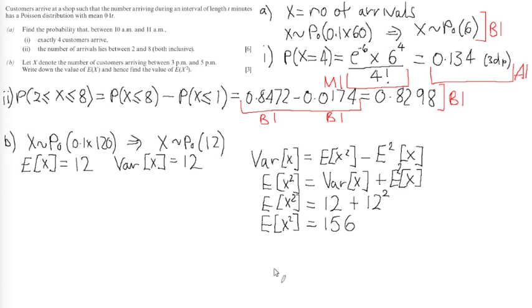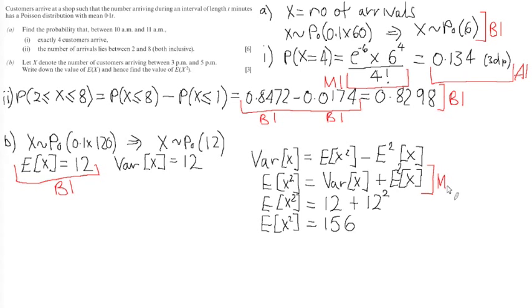There are three marks for this question. The first mark is a standalone statement mark for identifying that E(X) = 12. Then we get a method mark for identifying that E(X²) equals the variance of X plus [E(X)]². Finally, we get an accuracy mark for the correct answer that E(X²) = 156.